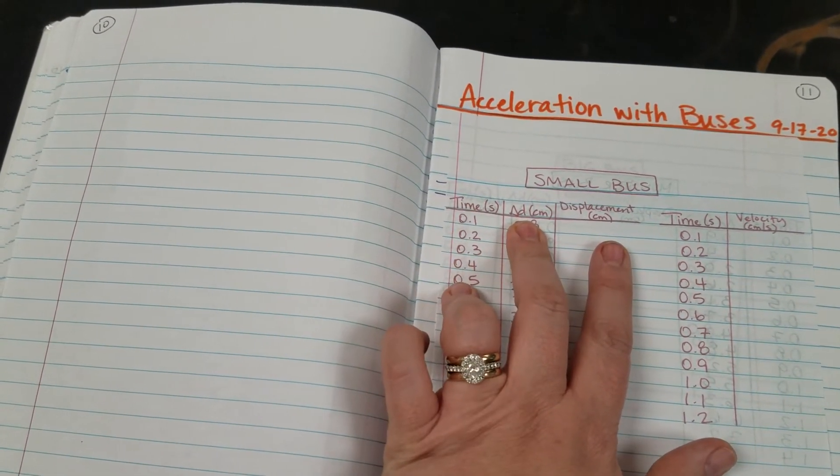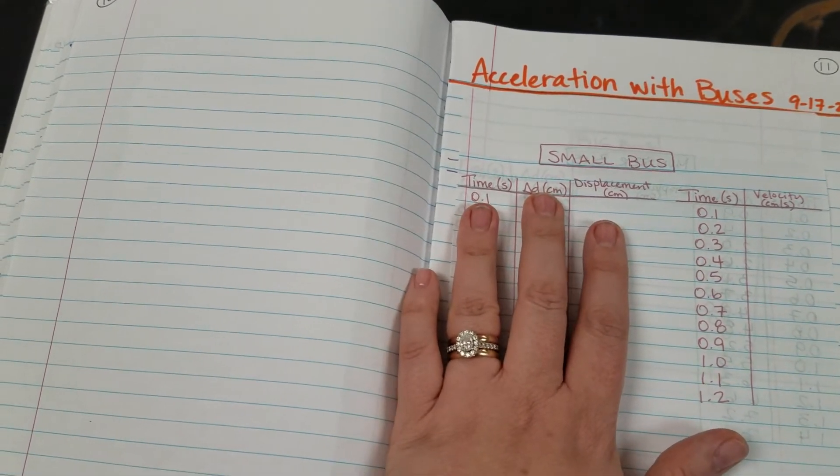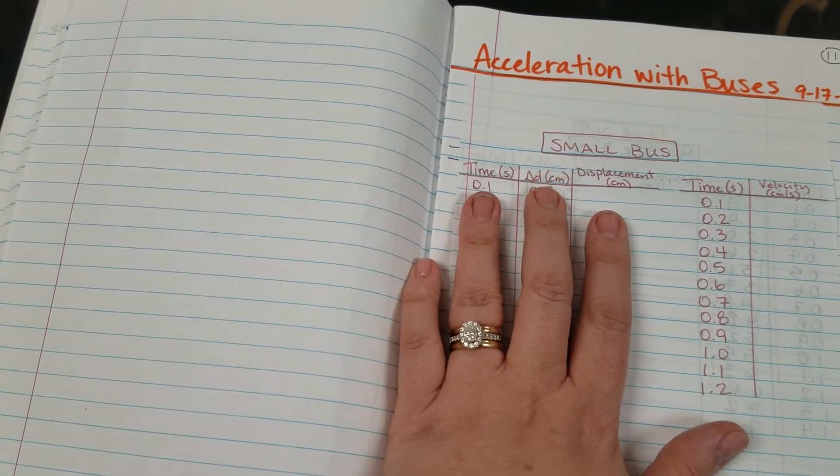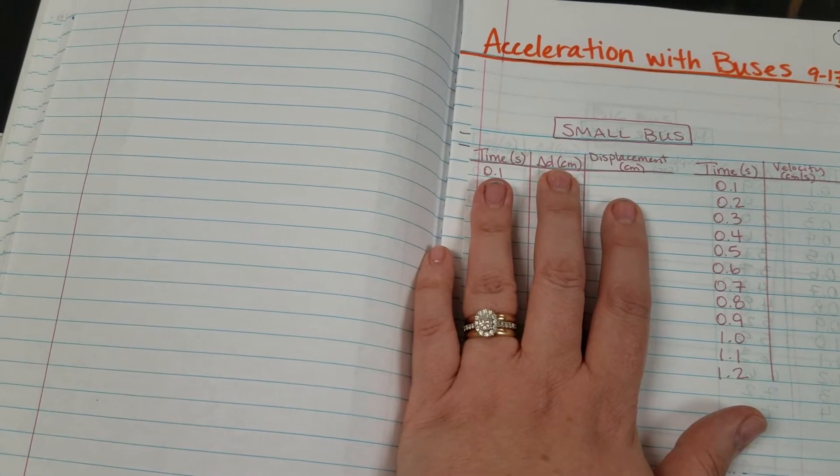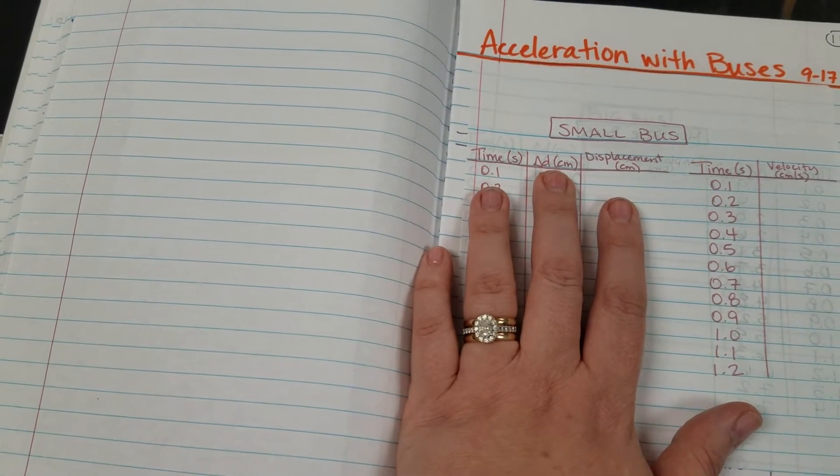I'm going to talk about the time and then each individual measurement that you see on the tape is going to be written underneath this delta D column right here.